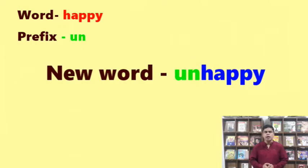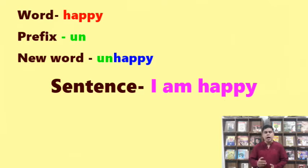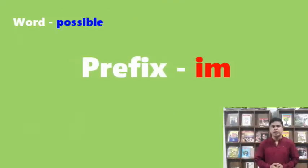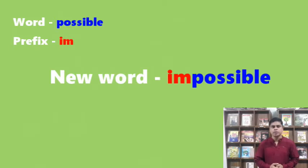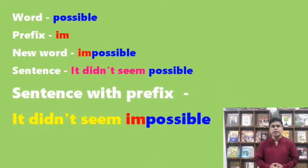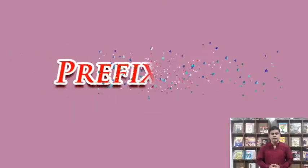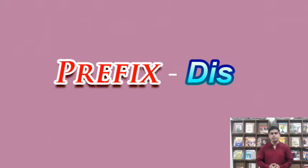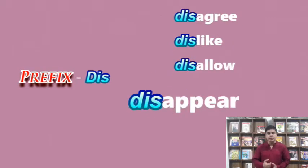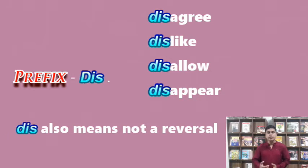Let us take some examples. The word 'happy' with the prefix 'un' gives the new word 'unhappy'. Sentence: 'I am happy.' Sentence with prefix: 'I am unhappy.' Another prefix: the word 'possible' with the prefix 'im' gives 'impossible'. Sentence: 'It didn't seem possible.' Sentence with prefix: 'It didn't seem impossible.' Another example: the prefix 'dis' — disagree, disallow, disappear — 'dis' also means not, a reversal.